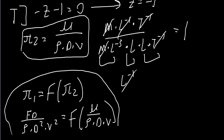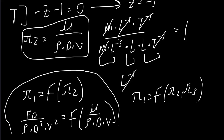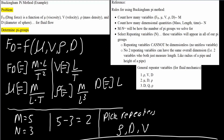To generalize: in our case we had 5 variables and 3 primary dimensions, giving 2 pi groups — pi 1 and pi 2. If we had 6 variables with the same 3 dimensions, we would solve for 3 pi groups: pi 1 = f(pi 2, pi 3). That's all that's needed to solve a Buckingham Pi method problem.